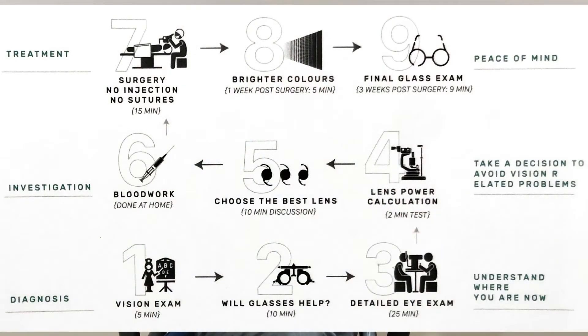Once we assess your vision, confirm that glasses are not really helping, and determine that your retina is completely normal, you will have effectively made the decision to undergo cataract surgery. The next step is to check the lens power. Lens power is calculated using formulas that depend on the measurements of the eye, so we perform a test called the A-scan, which measures all the eye's dimensions. After the A-scan, you and I have a discussion for about 10 to 15 minutes about which lens would be best for you.